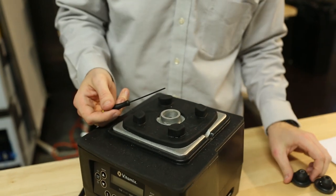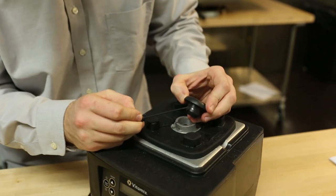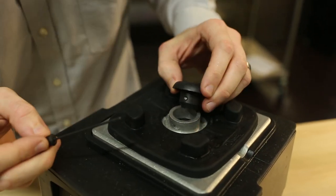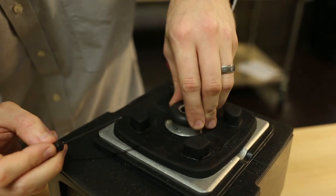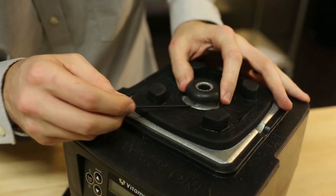And then get your replacement drive socket. Find that same arrow, or you can just look for the inset screw, and then just toss that right on there. Line up the arrow again with the little hole.